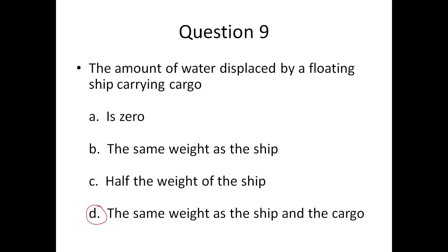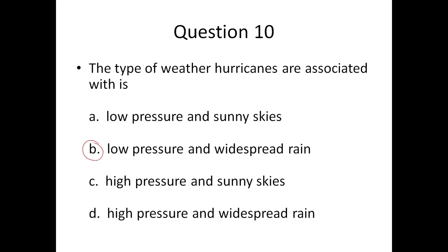Question nine: The amount of water displaced by a floating ship carrying cargo will be the same weight as the ship including the weight of the cargo. Question 10: The type of weather hurricanes are associated with is low pressure and widespread rain.